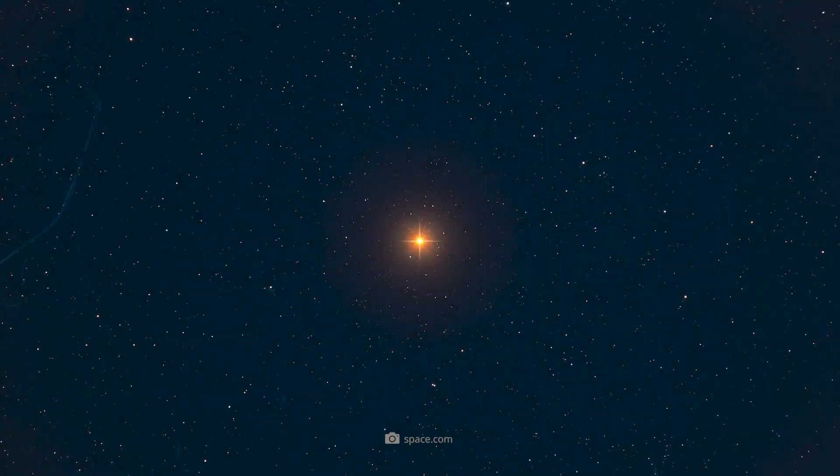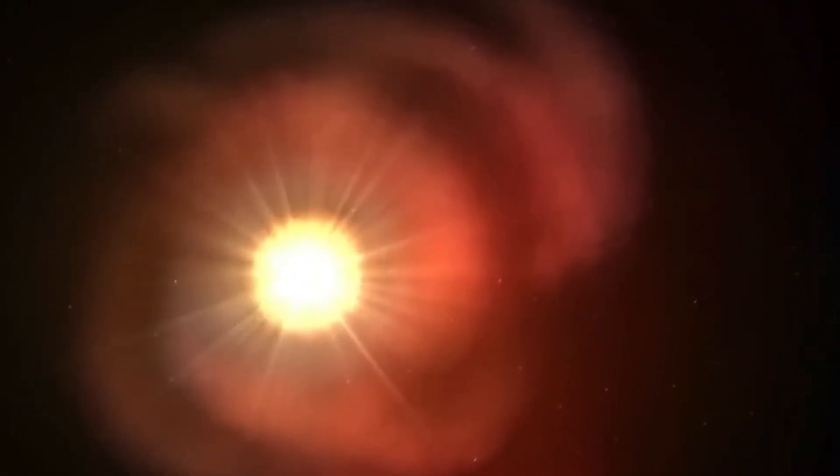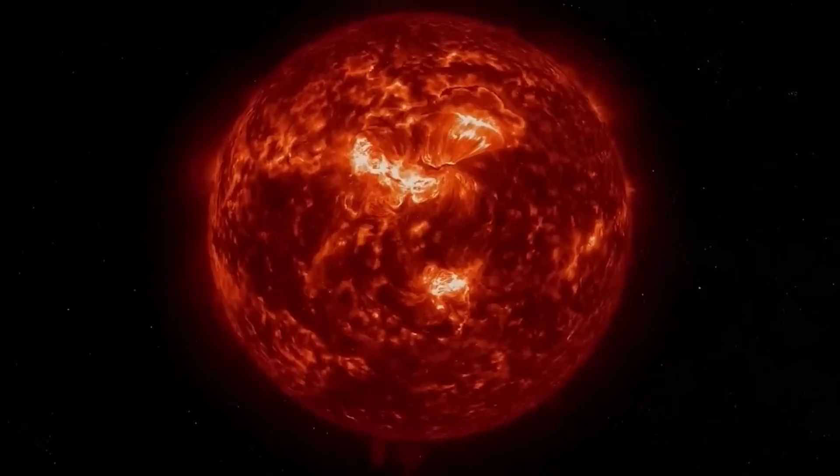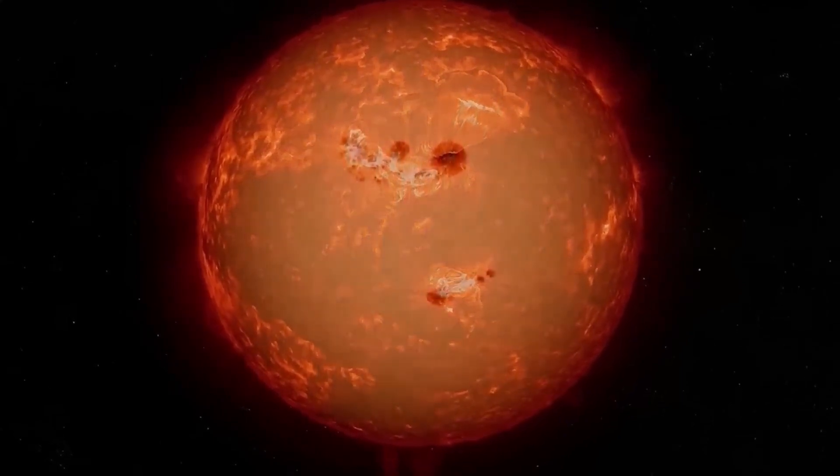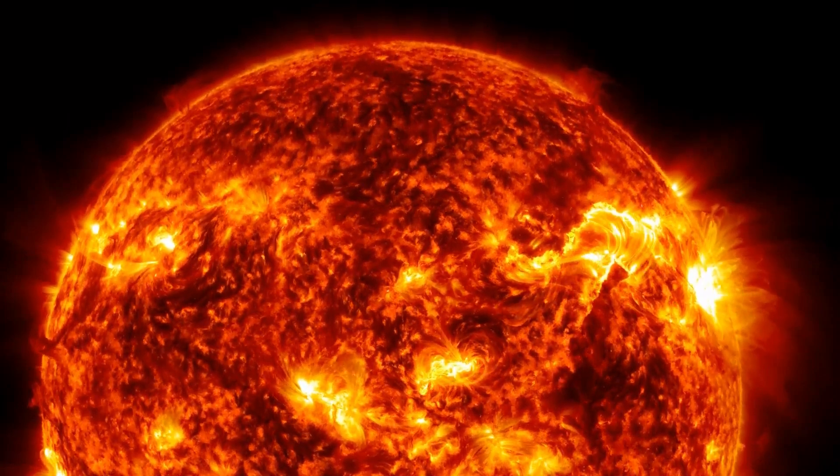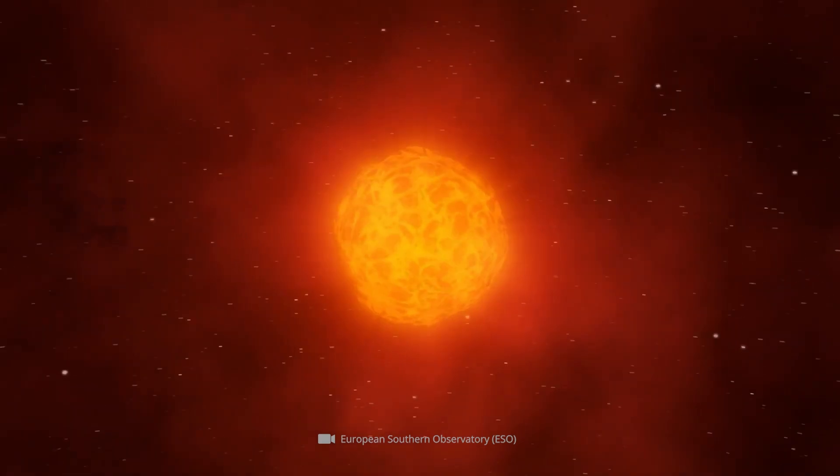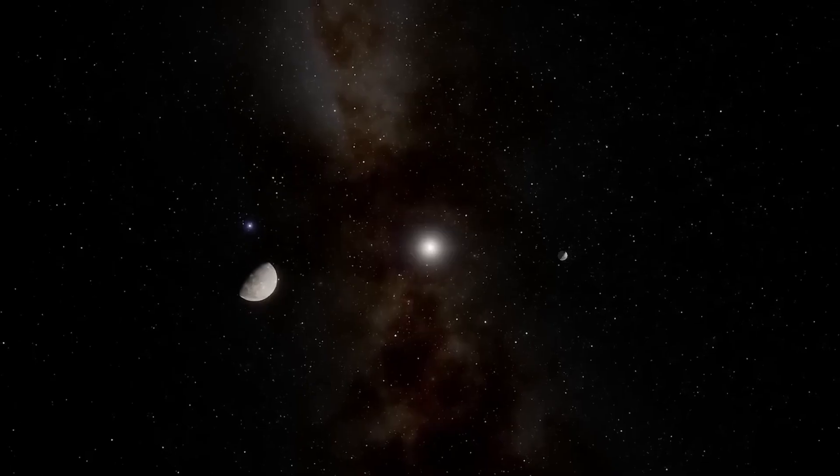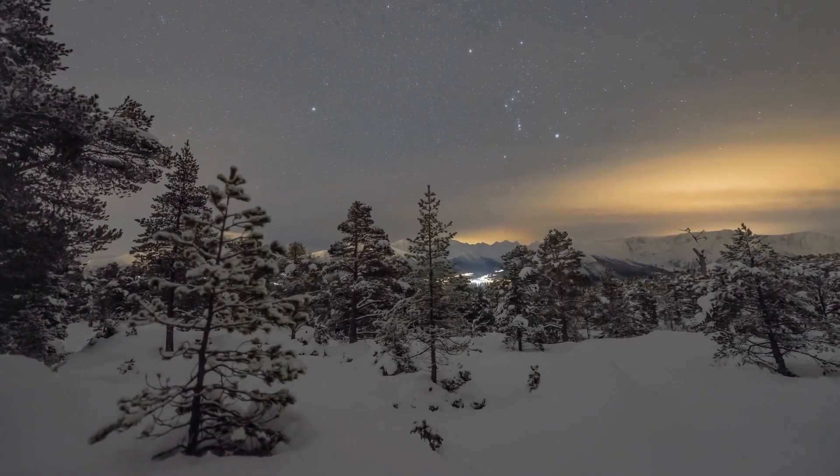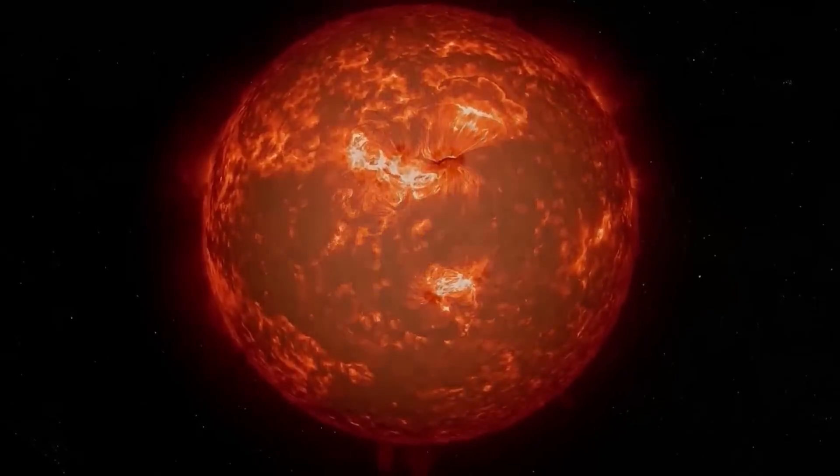Located in the constellation Orion, Betelgeuse trumps our fixed star in every conceivable astronomical respect. In detail, the giant star has a diameter 800 times that of the sun. In this constellation, the sun is transformed into a tiny pinhead that would fit 500,000 times in the shoulder star of Orion. The differences in luminosity are no less extreme. Betelgeuse shines 10,000 times brighter than our source of heat and life.